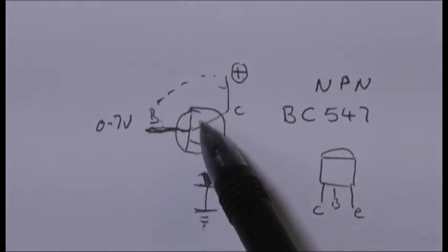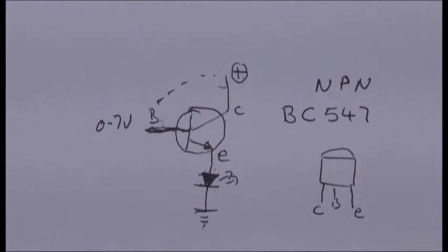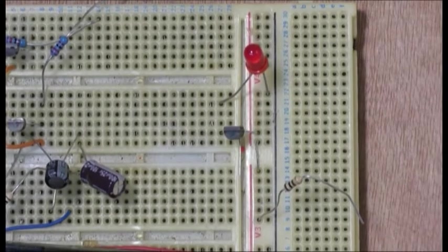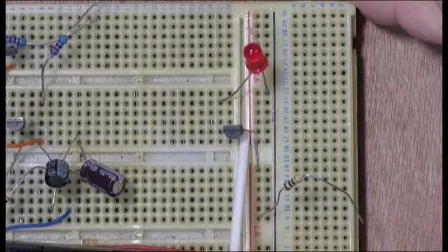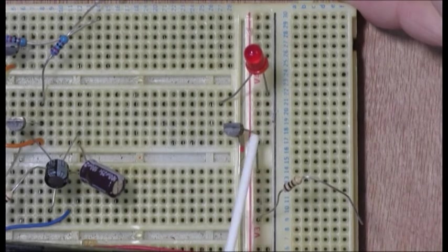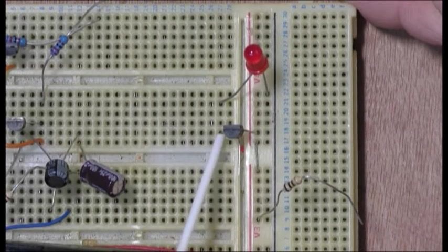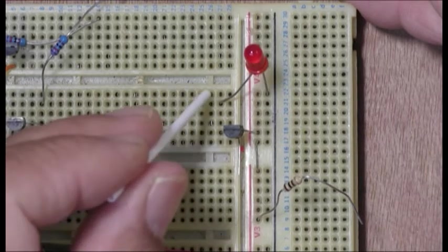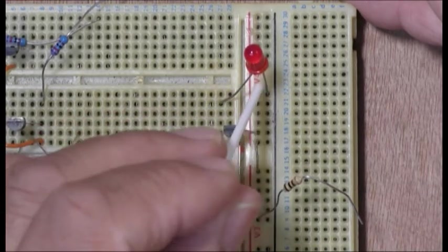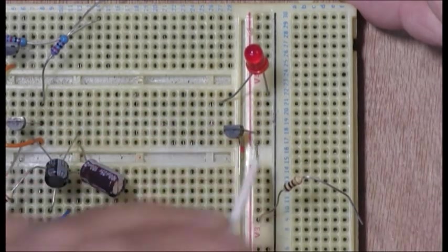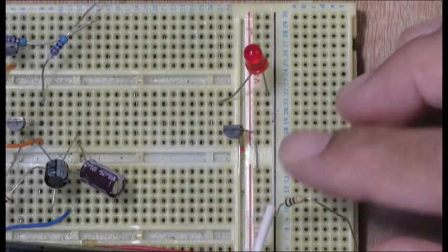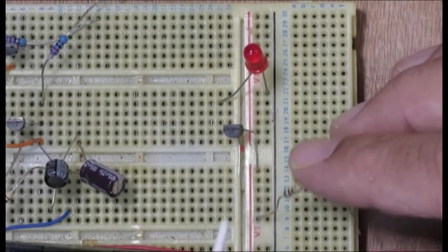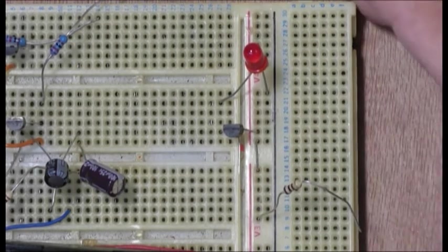Okay, here we go. So guys, the collector goes to the positive there, there's your base, that's your emitter going to the positive of the LED back into negative. And this lead is just to catch all of the positive. So I'm going to put the nine volts in.